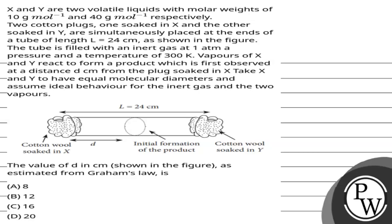Hello Bacho, let's read the question. X and Y are two volatile liquids with molecular weights of 10 gram per mole and 40 gram per mole respectively. Two cotton plugs, one soaked in X and the other soaked in Y, are simultaneously placed at the ends of a tube of length L equals 24 cm as shown in the figure. The tube is filled with an inert gas at 1 atm pressure and a temperature of 300 Kelvin.